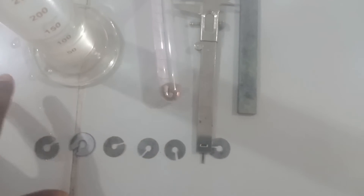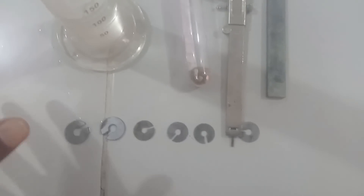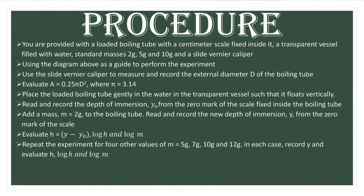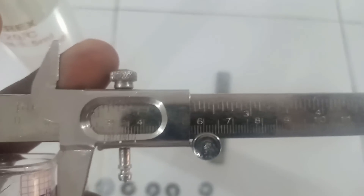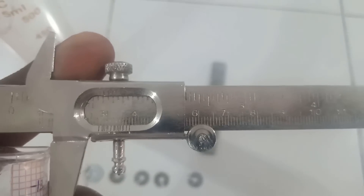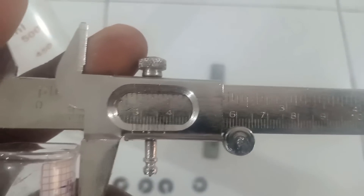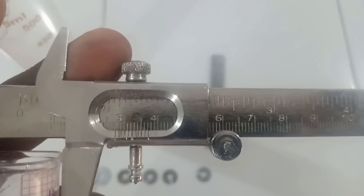What is the procedure? First of all, we are going to use the vernier caliper to measure the external diameter of the boiling tube. So I am going to clip the vernier caliper on the boiling tube and measure the external diameter. Here is the boiling tube firmly clamped with the vernier caliper. Now we want to find out what is the reading. There are two scales in the vernier caliper — the main scale and the vernier scale.